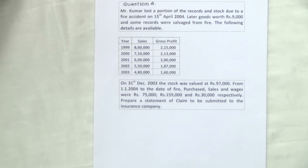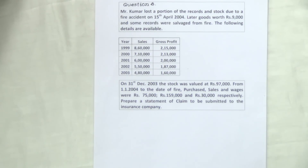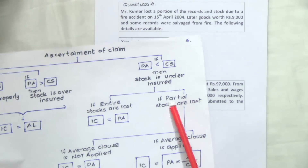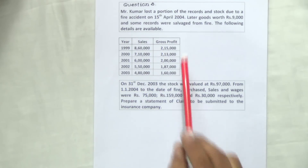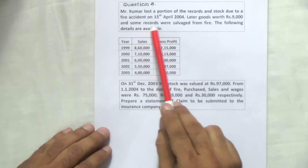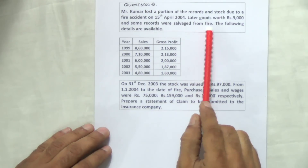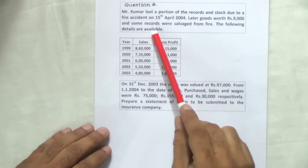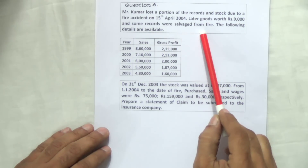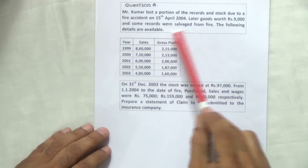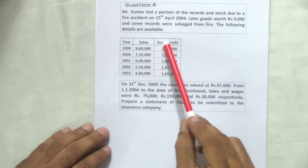Let's look at problem number eight. Mr. Kumar lost a portion of the records. The moment we see the word 'a portion,' we know partial stocks are lost — only part of it. He lost a portion of the stock due to fire accident on 15th April 2004. Later, goods worth 9,000 and some records were salvaged from the fire. The following details are available.